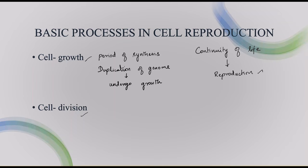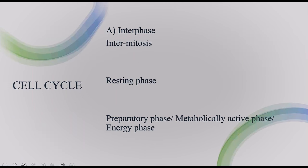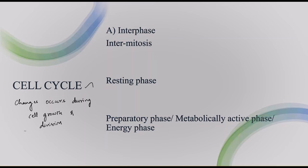What is going to happen in the cell division? For example, an adult cell is taken. This cell will undergo division to form two daughter nuclei or two daughter cells. When these two daughter cells undergo division, it will form four daughter cells. Now let's enter into the topic of cell cycle. What is meant by cell cycle? The changes that occur during cell growth and division are collectively called the cell cycle.